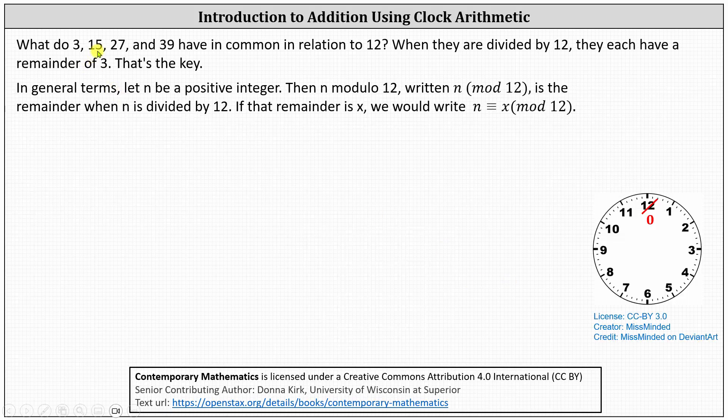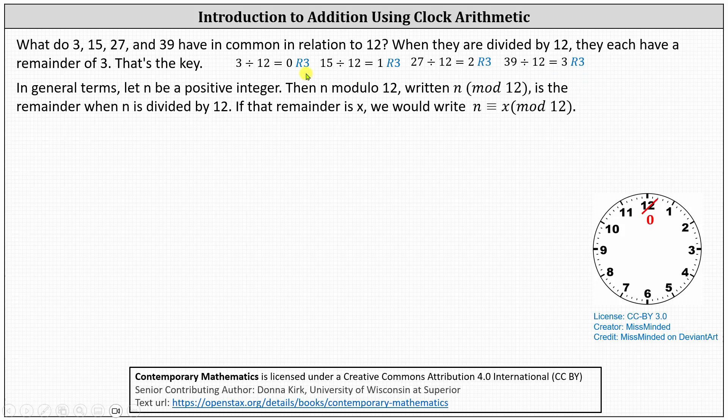What do the numbers 3, 15, 27, and 39 have in common in relation to 12? If we divide all of them by 12, notice in each case the remainder is 3. This is key for clock arithmetic. In general terms, if we let n be a positive integer, then n modulo 12, written n mod 12, is the remainder when n is divided by 12. If the remainder is x, we can also state n is congruent to x mod 12.